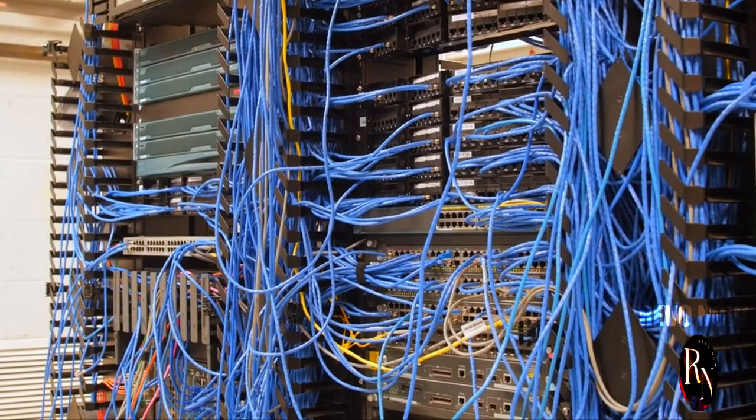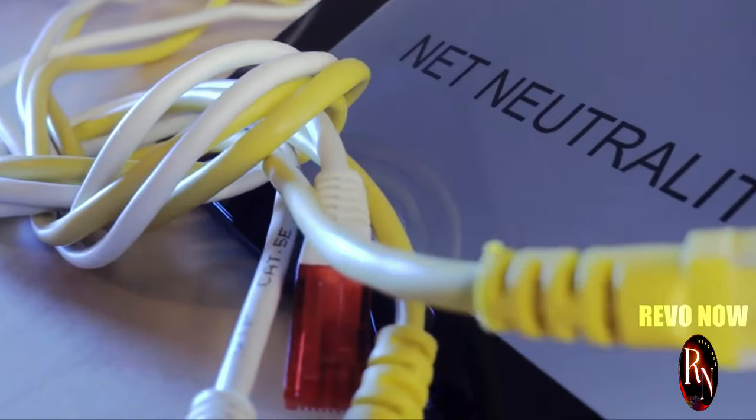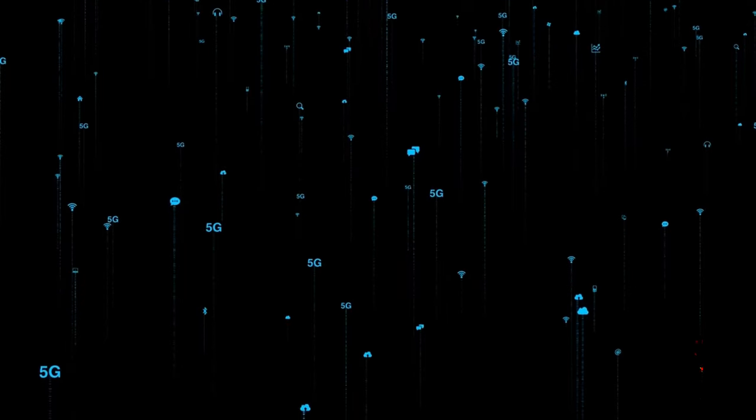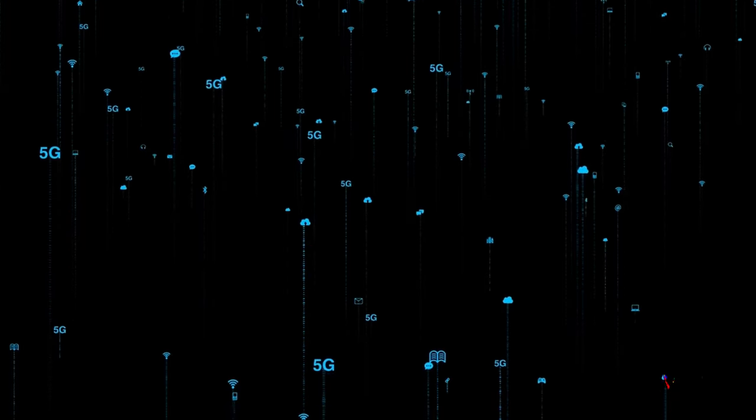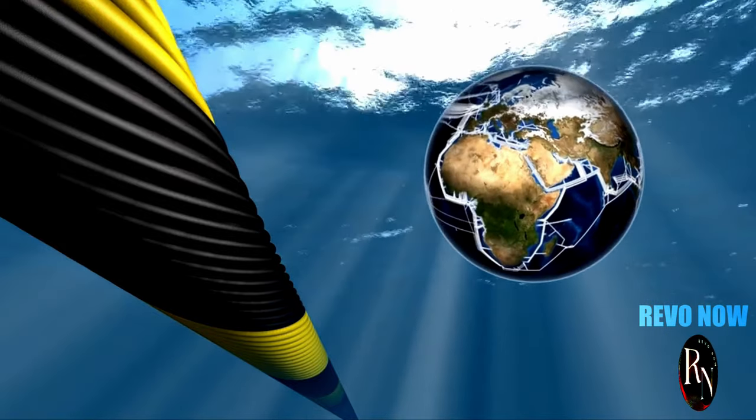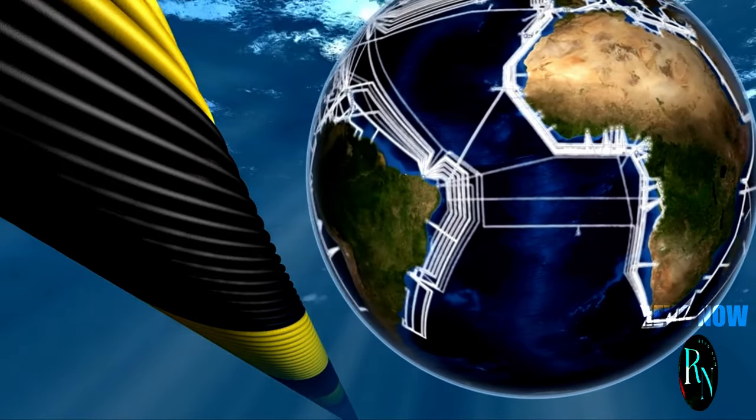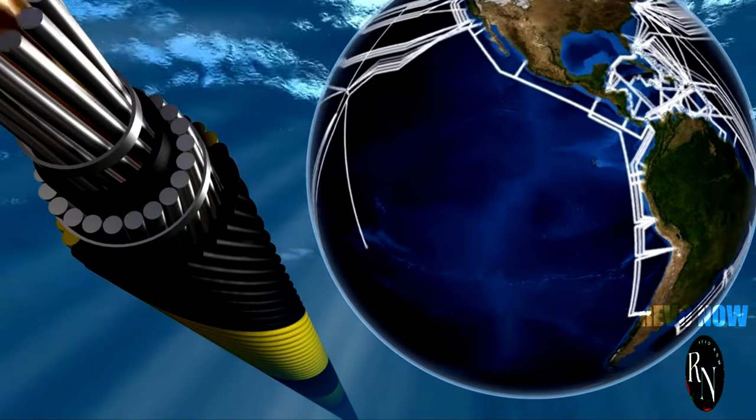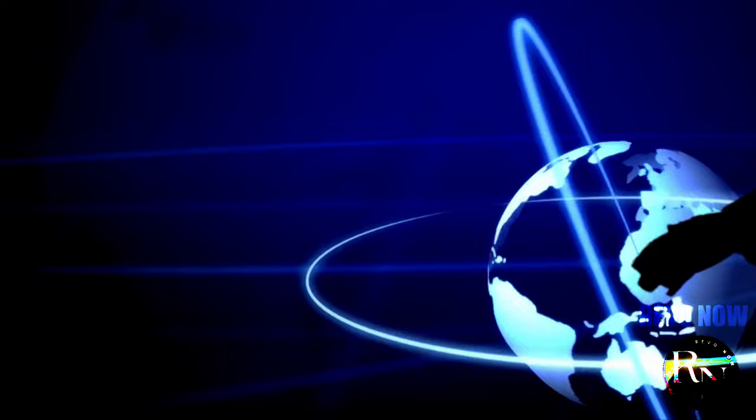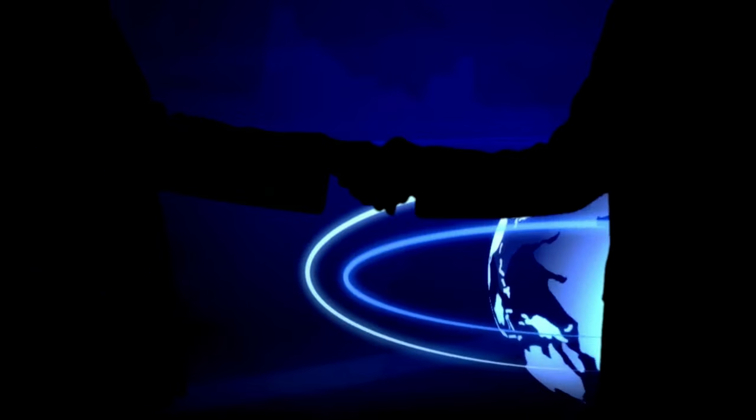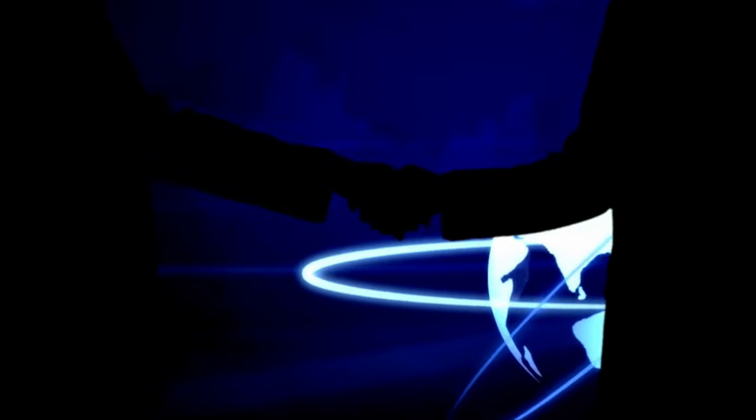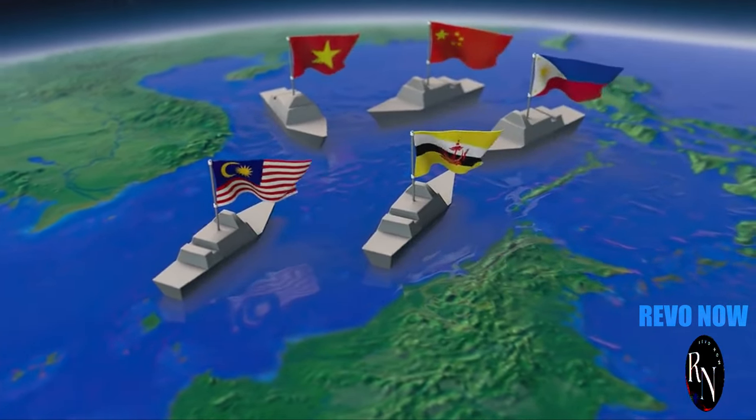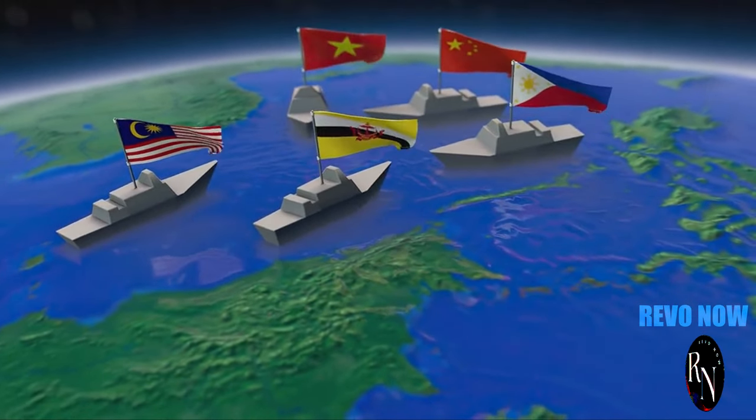They are the unseen arteries of the internet, enabling everything from financial transactions to social media interactions. The control over these cables is a matter of significant strategic importance. Currently, it's a mix of private companies and government entities, each with their own interests and agendas. Major telecommunications companies like AT&T, Verizon, and T-Mobile, alongside tech giants such as Google and Facebook, own and operate significant portions of this network. Governments too have a stake, often partnering with these companies to ensure national security and economic stability.